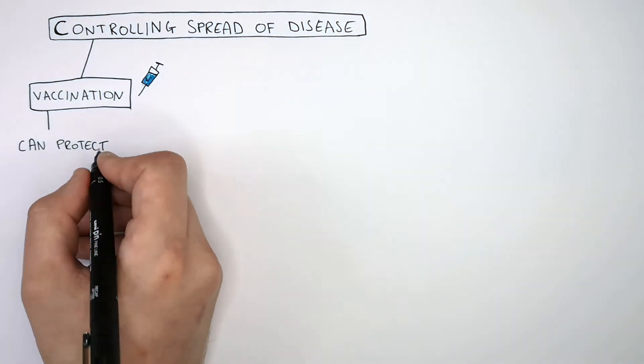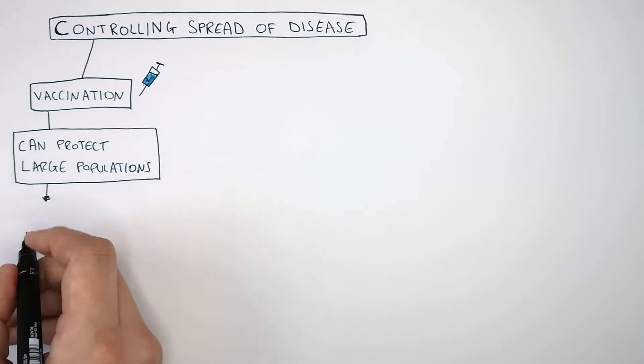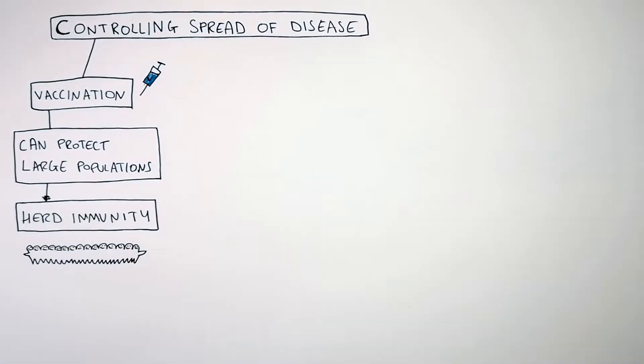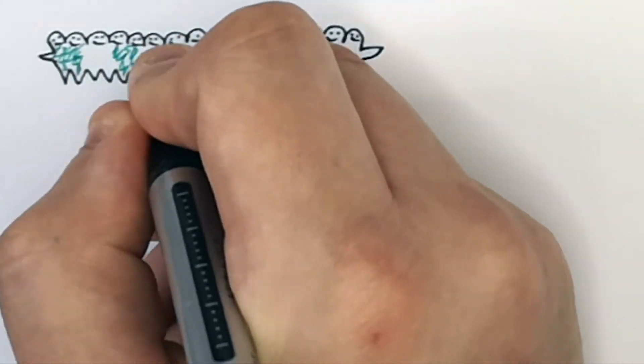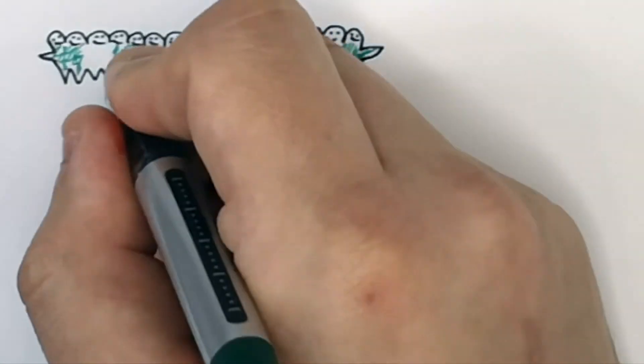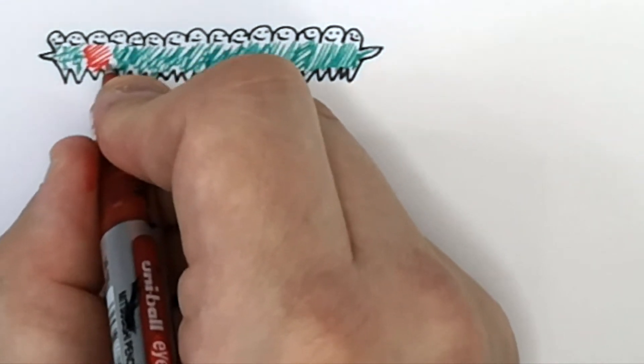You can protect large populations by using vaccines, and we call this herd immunity. This is an example of herd immunity. All the people who've been colored in green have been vaccinated against the disease. The people that are colored in red have not been vaccinated against the disease.